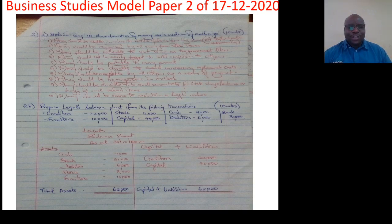Explain any 10 characteristics of money as a medium of exchange. So you are explaining the characteristics. You name the characteristic and explain it. So money should be stable in value so as to instill confidence for a long period of time, or so that it does not fluctuate its value unnecessarily. Two, money should be recognized easily by all away from other items. Three, money should be malleable to mint the coins as the government likes.